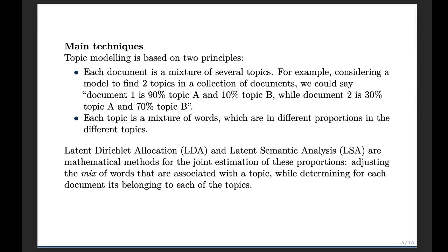Topic modeling is based on two principles. First, we consider each document to be composed by a mixture of several topics. For example, we could say that a document is 90% topic A and 10% topic B, while another document can have different percentages of the topics.